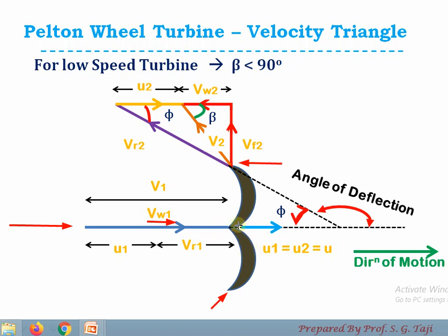Since V1 is shown at the inlet point, the relative velocity can be calculated as velocity of jet minus velocity of bucket — that is Vr1 = Vw1 − U1 = V1 − U. After striking at the splitter, the first component at the outlet is Vr2, the relative velocity. If the bucket is smooth and frictionless, relative velocity at inlet equals relative velocity at outlet, so Vr2 = Vr1. Vr2 makes an angle phi with the direction of motion, where phi is the outlet tip angle, generally varying between 10 to 15 degrees.